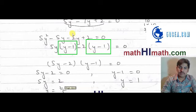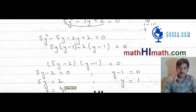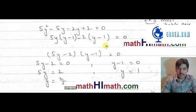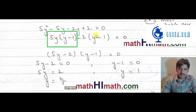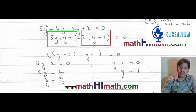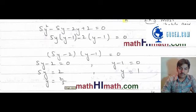अब हम इसको factor करते हैं۔ y minus 1 common لیا، اس میں سے بھی y minus 1 common چلا گیا اور یہاں سے بھی y minus 1 common چلا گیا۔ یہاں آپ کے پاس آ گیا: 5y minus 2 اور y minus 1، that is equal to zero.